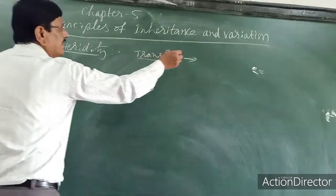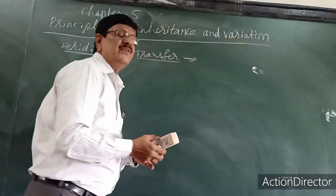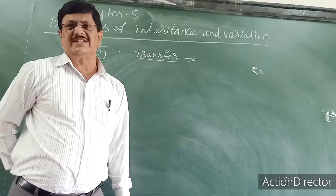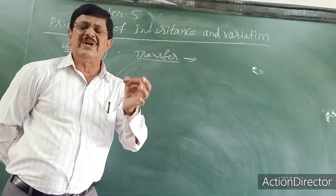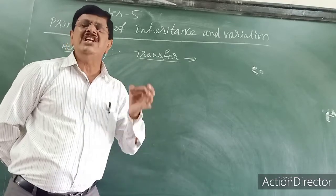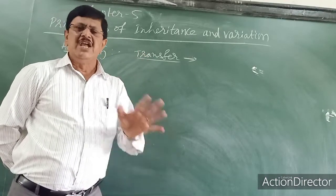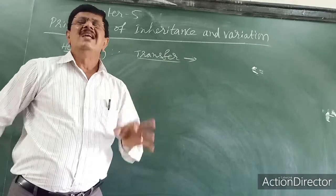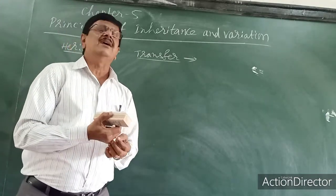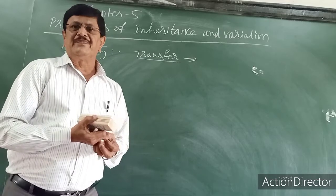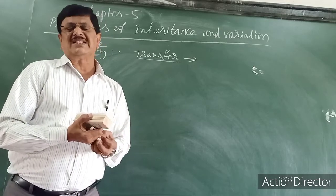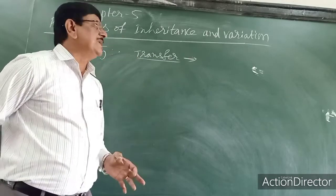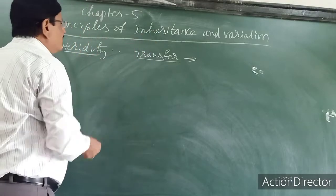Why are variations? There are differences in the individuals of a species. You won't find 100% identical individuals — except identical twins, others show variation. Differences in the individuals of a species is called variation.